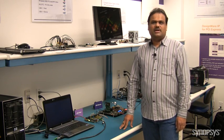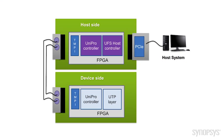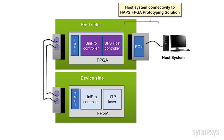Let's take a look at a block diagram of the system we are showing today. This block diagram shows a typical use model of the UFS system for a mobile storage application. In this example, we will see communication between the UFS host and UFS device. The UFS host controller driver initiates SCSI commands. These SCSI commands are transferred to the UFS host controller hardware over a PCI Express interface in our prototype system.